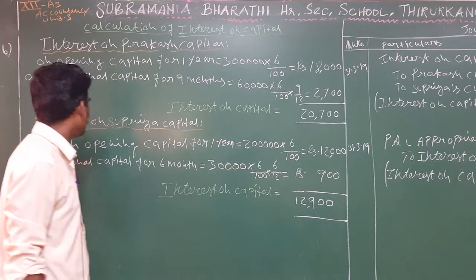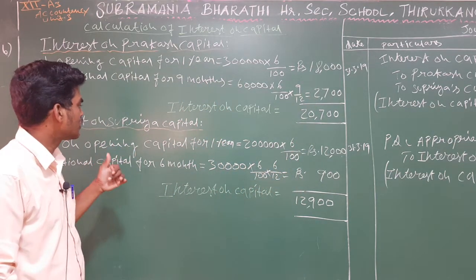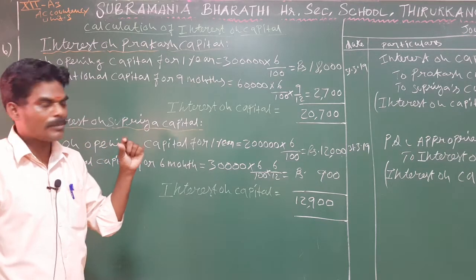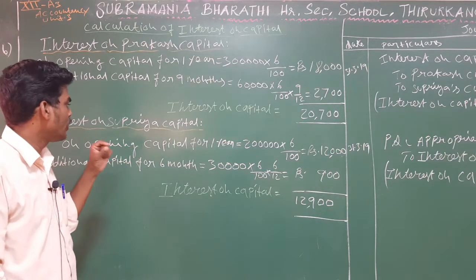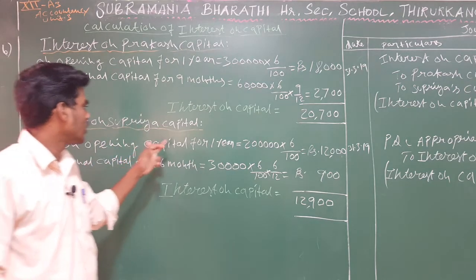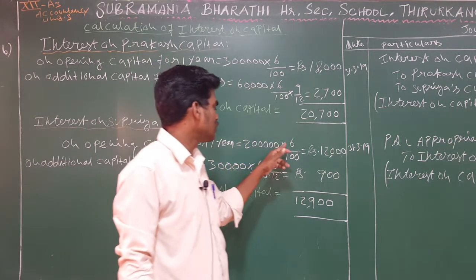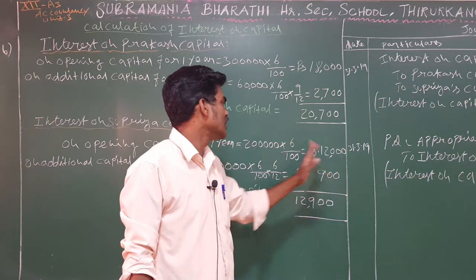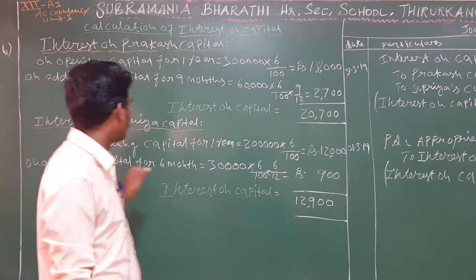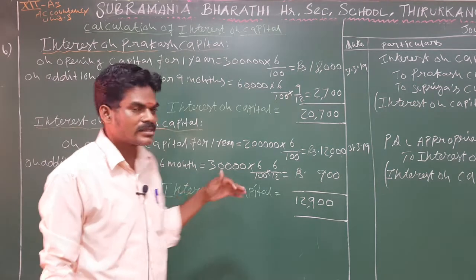Next, interest on Supriya's capital. For the opening capital, it is for the full year: 2 lakhs × 6% = Rs. 12,000. For the additional capital of 30,000, it is for 6 months.